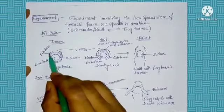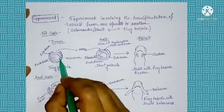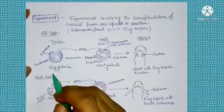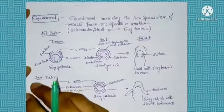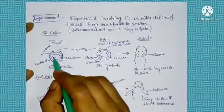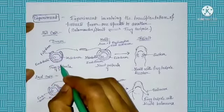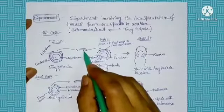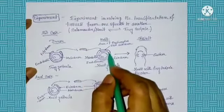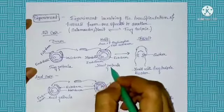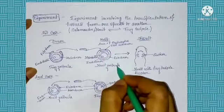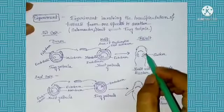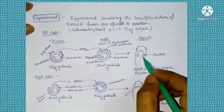From the three germ layers — ectoderm, mesoderm, and endoderm — the ectoderm is the outermost layer, mesoderm is the middle layer, and endoderm is the innermost layer of the embryo. All organs of an organism are developed from these layers. In this case, a small part of the ectodermal portion of the frog gastrula is isolated, and this isolated ectodermal portion is then transplanted into the ectodermal portion of the newt gastrula from where the newt mouth is formed.